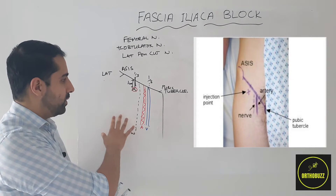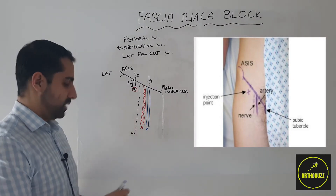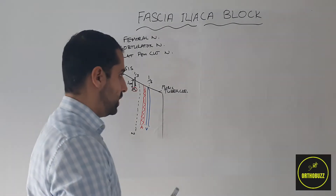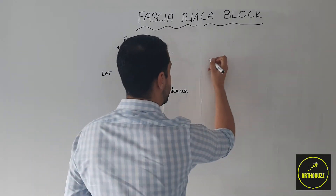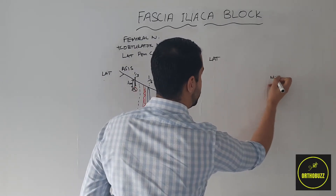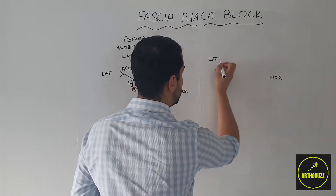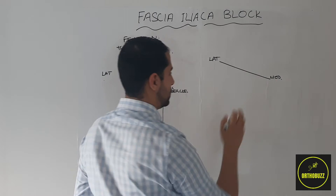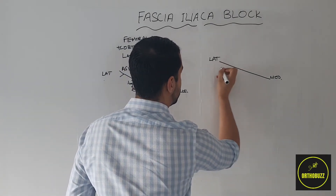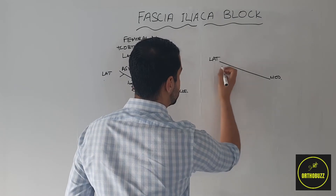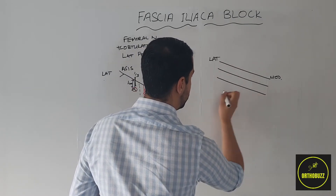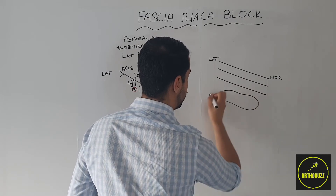We've seen where we would inject on this image, but let's have a look at what we're doing in cross section. Taking a lateral view here with the medial side here, and a cross section with the patient's feet coming out of the wall, we have the layers: the skin, the next layer, the third layer, and then the muscle.